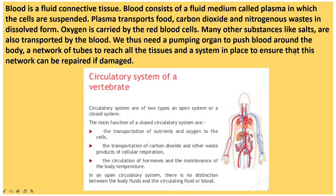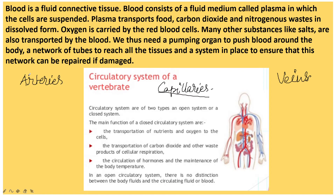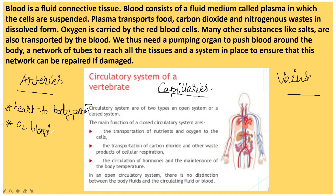Blood vessels include arteries, veins, and capillaries. Arteries carry blood from the heart to other body parts and carry oxygenated blood. Blood flows at very high speed and under high pressure through arteries. Valves are absent in arteries. Arteries are very deep seated.